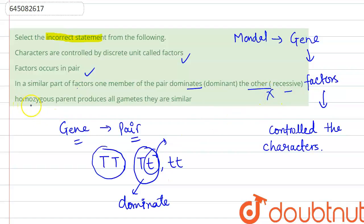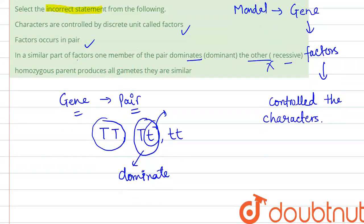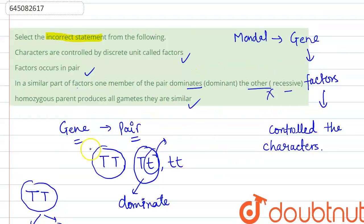Last, option D: Homozygous parents produce all gametes that are similar. What do you mean by homozygous parent? The homozygous parents means the pair of genes which are present are similar in nature, like TT. So the formation of gametes that occur is always similar.